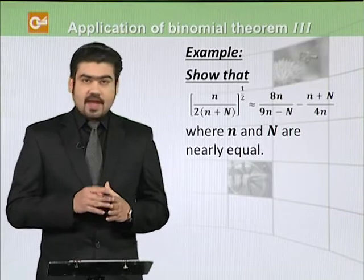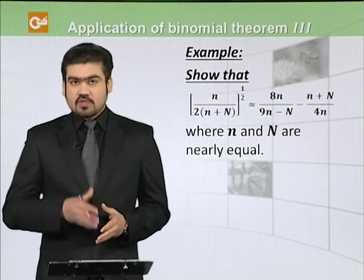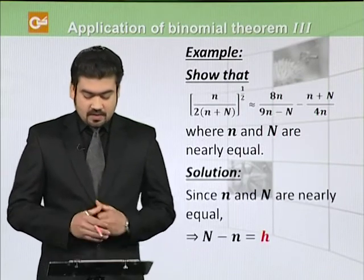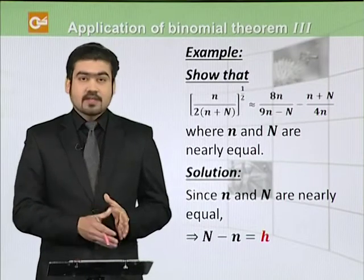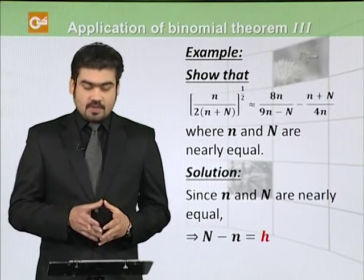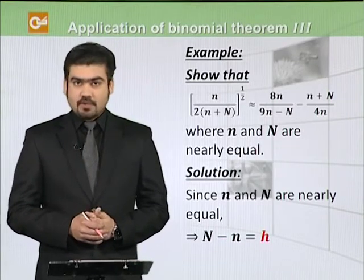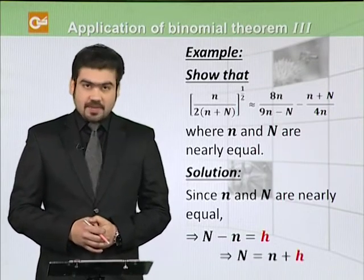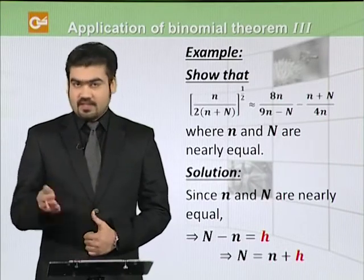Now you see that small n and capital N are nearly equal. Iska matlab ye hai ki in dono ka jo difference hoga, that will be nearly close to zero. By using that, ham dekhte hain ki capital N minus n — we take this difference and assume kar lete hain ki this equals h. So jahaan pe capital N or small n ka difference ho, wahaan h replace kar denge. Capital N equals small n plus h, where h is the difference between capital N and small n.